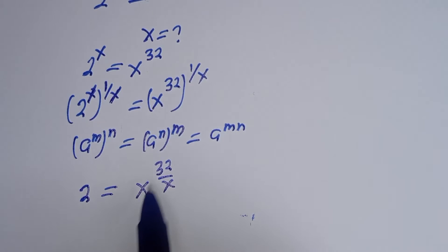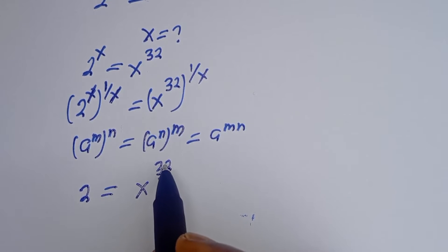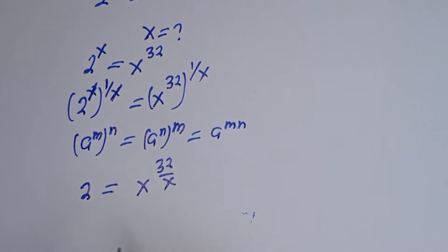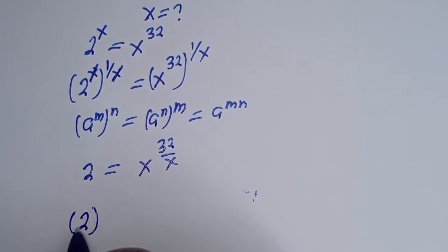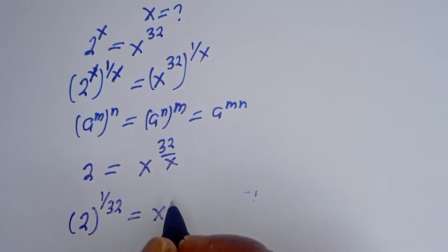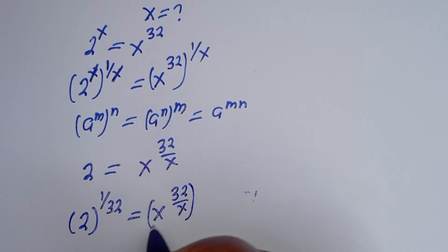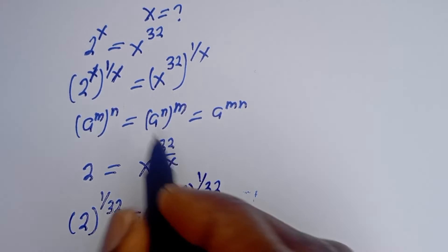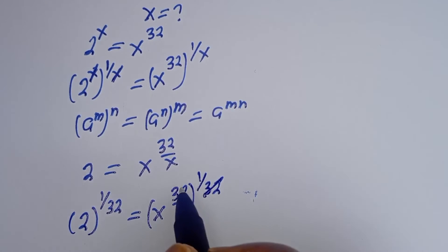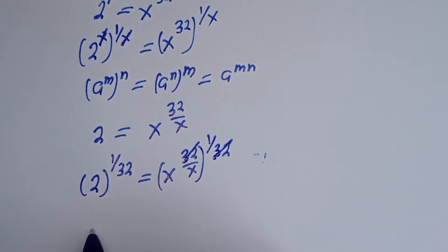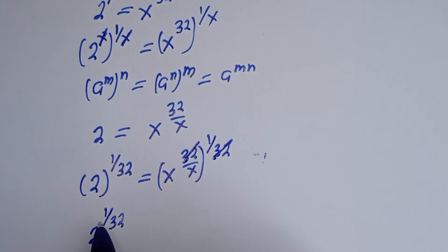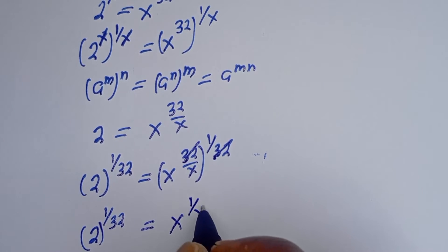Now let's multiply the exponent of both sides again by 1 over 32, in order to eliminate this 32. We get 2 to the power of 1 over 32 is equal to S to the power of 32 over S, raised to 1 over 32. And from this rule again, this will cancel this. We have 2 to the power of 1 over 32 is equal to S to the power of 1 over S.